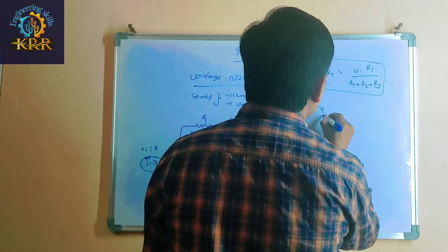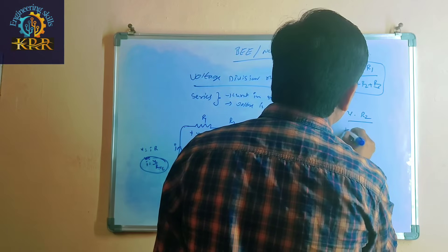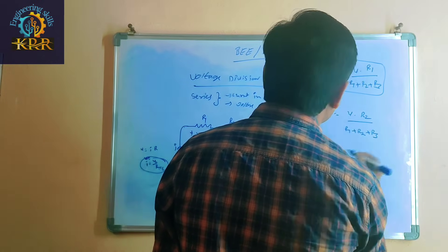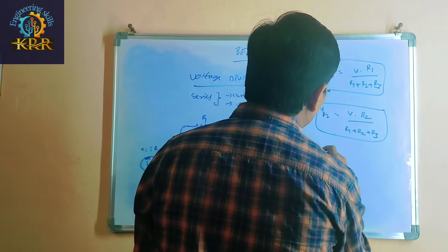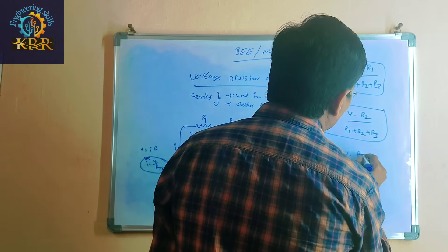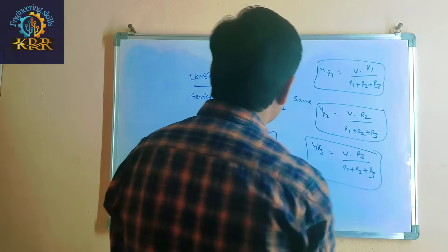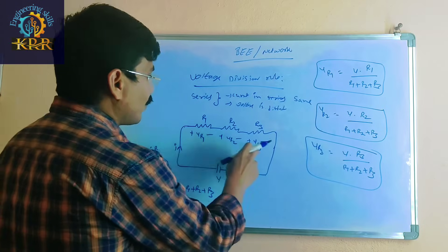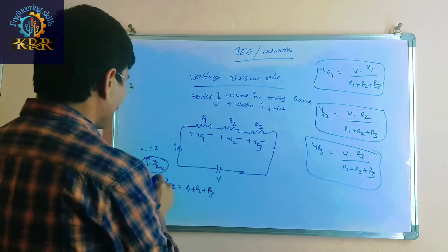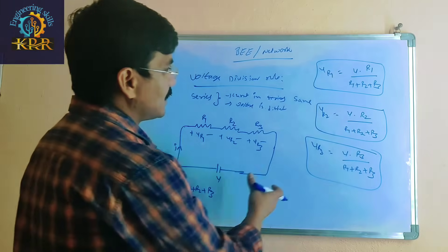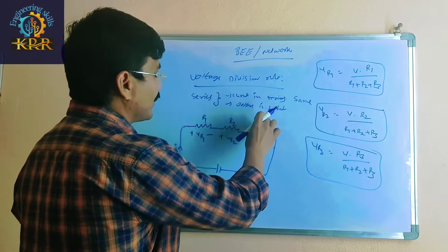Voltage across R2 is equal to the total voltage multiplied by R2, divided by R1 plus R2 plus R3. After that, voltage across R3 is equal to the total voltage multiplied by R3, divided by R1 plus R2 plus R3. Finally, these three voltages sum to equal the total voltage.